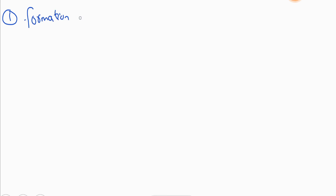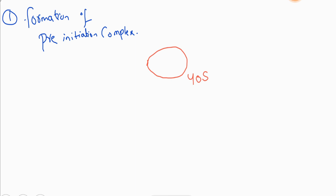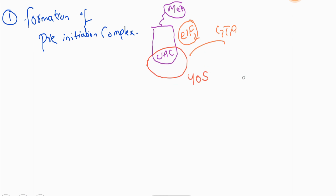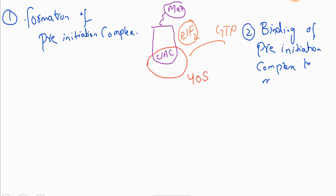The first step in initiation of translation is the formation of the pre-initiation complex. The pre-initiation complex consists of the small ribosomal subunit (40S), the methionine transfer RNA containing the anticodon, the initiation factor eIF2, and GTP.